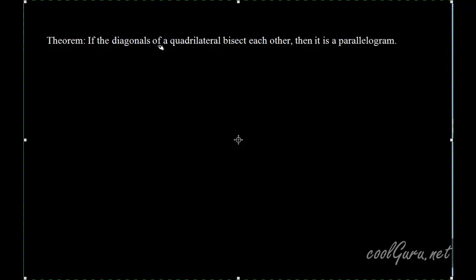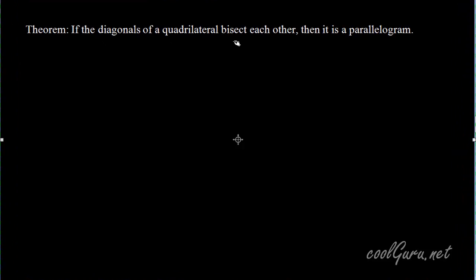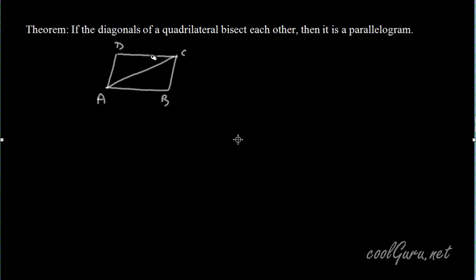We will prove that in a quadrilateral, if diagonals bisect each other, then that quadrilateral is a parallelogram. Consider quadrilateral ABCD where AC and BD are its diagonals intersecting at point O. It is given that AO is equal to CO, and BO is equal to DO — that is, the diagonals are bisecting each other.